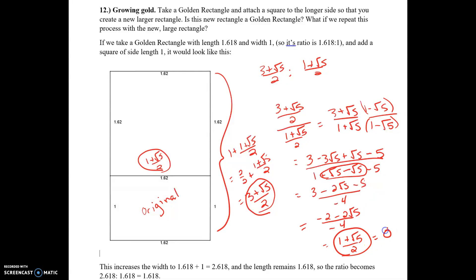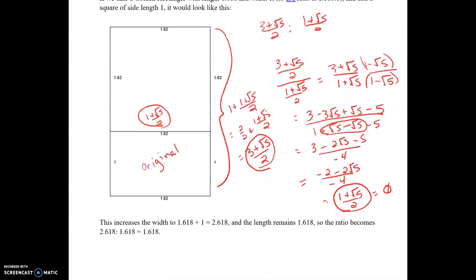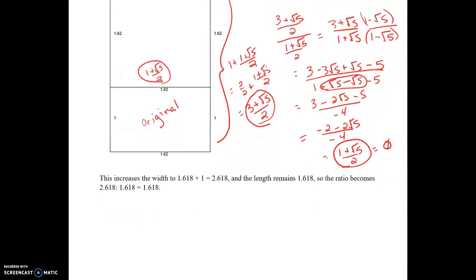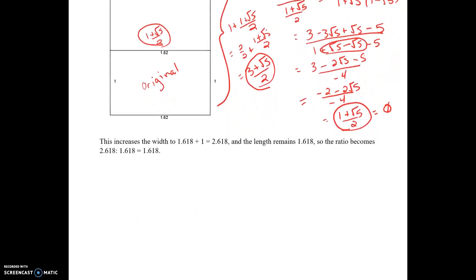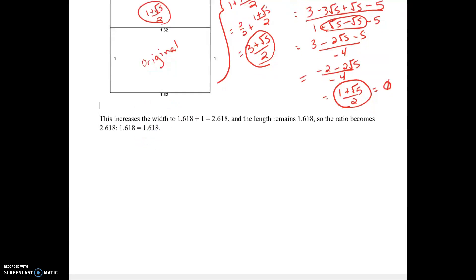This shows us that we do have our ratio of phi, or phi over 1. You can also do this in decimals: the ratio is 1 + 1.618 to 1.618, and when you divide that, you still get 1.618. So that new rectangle is a golden rectangle.